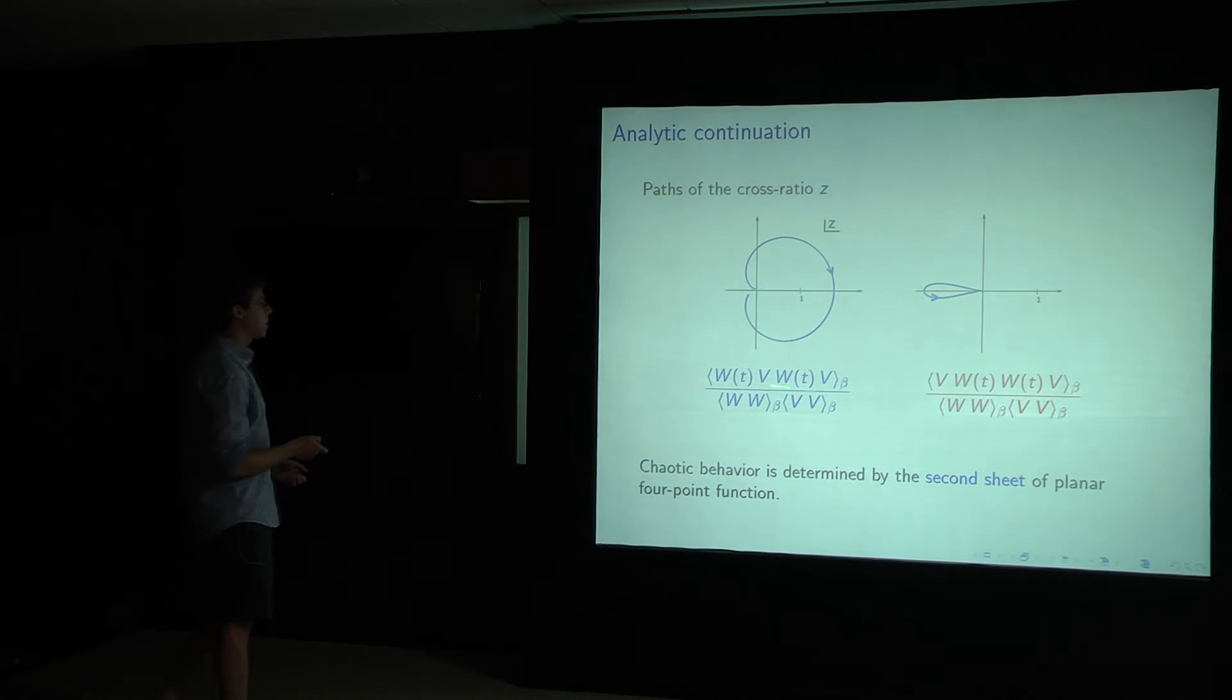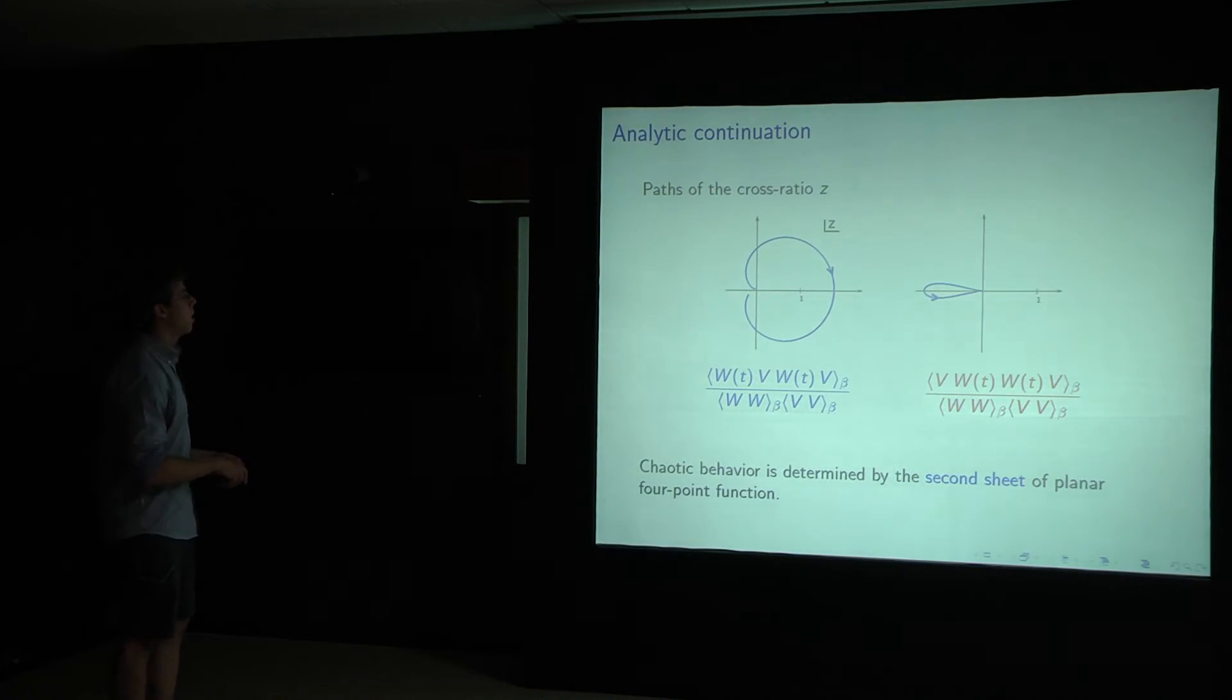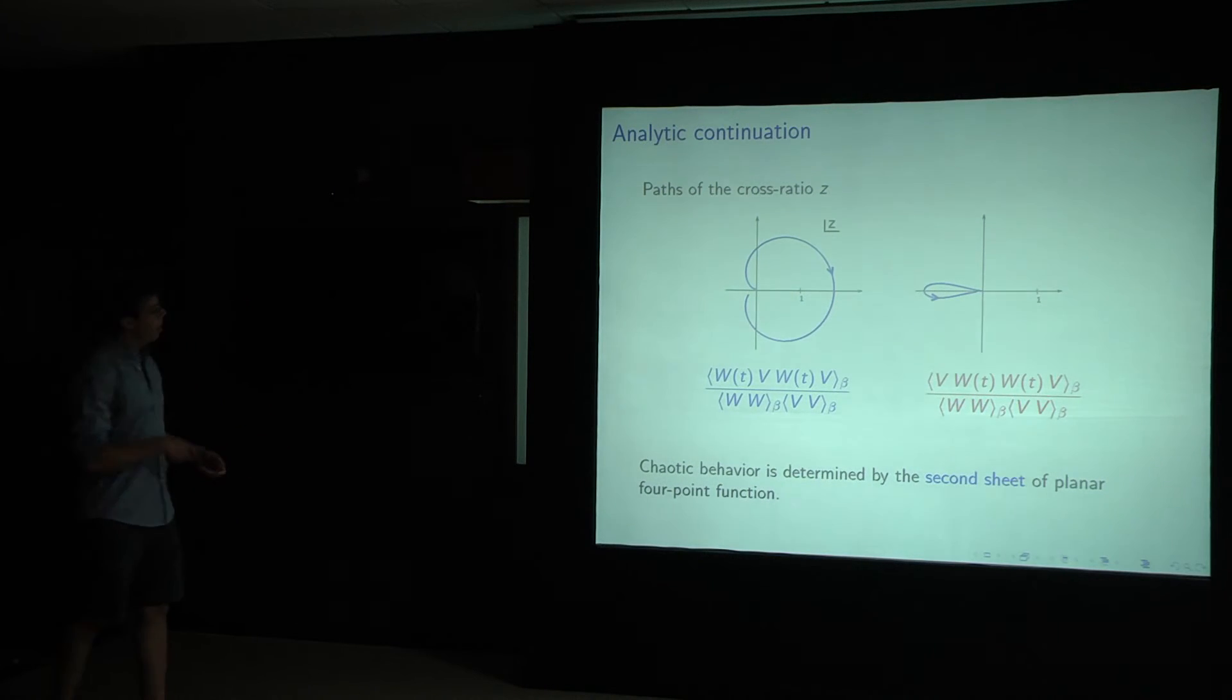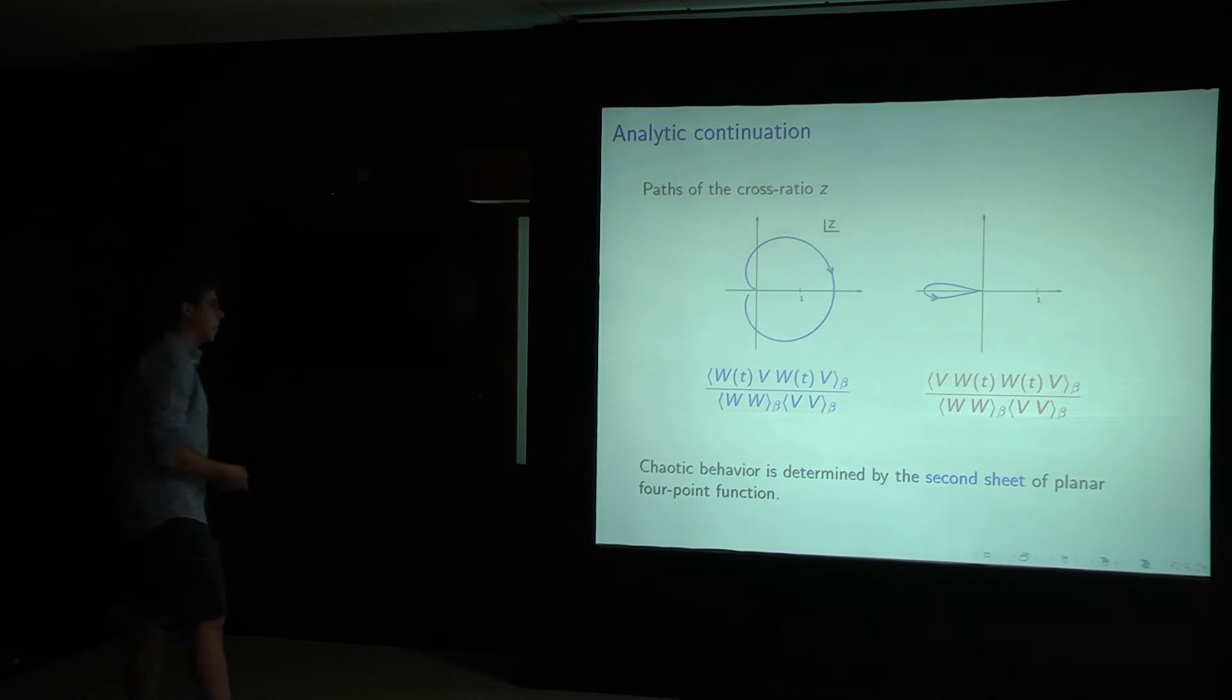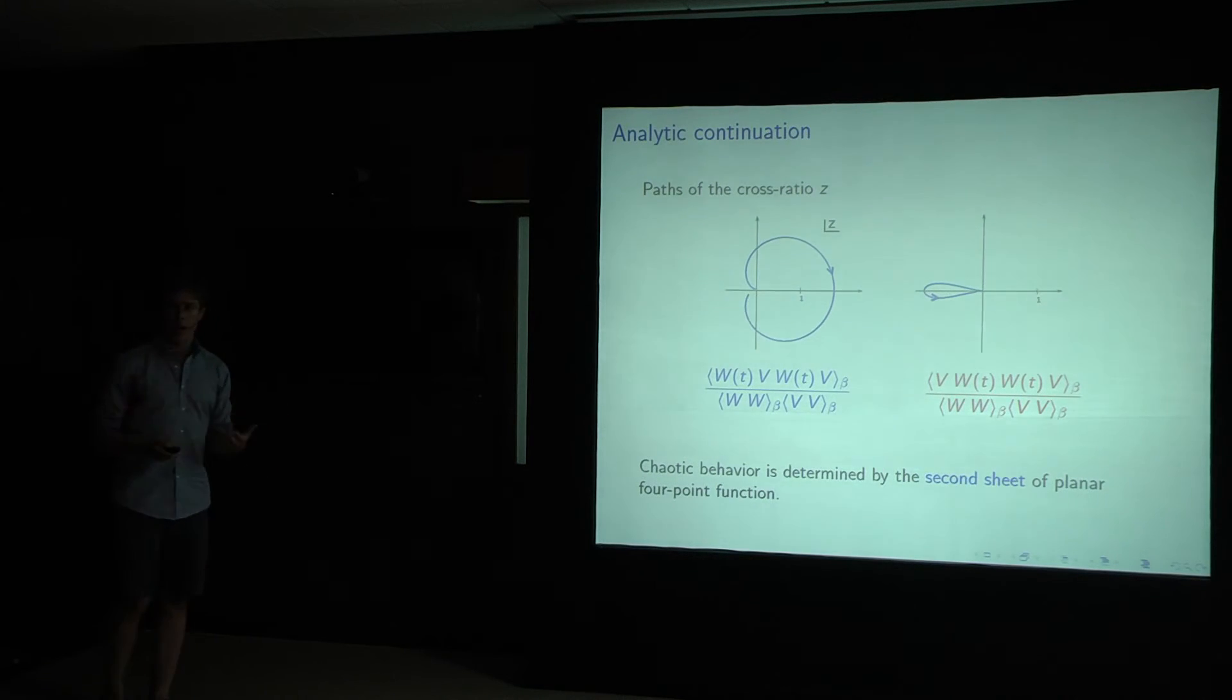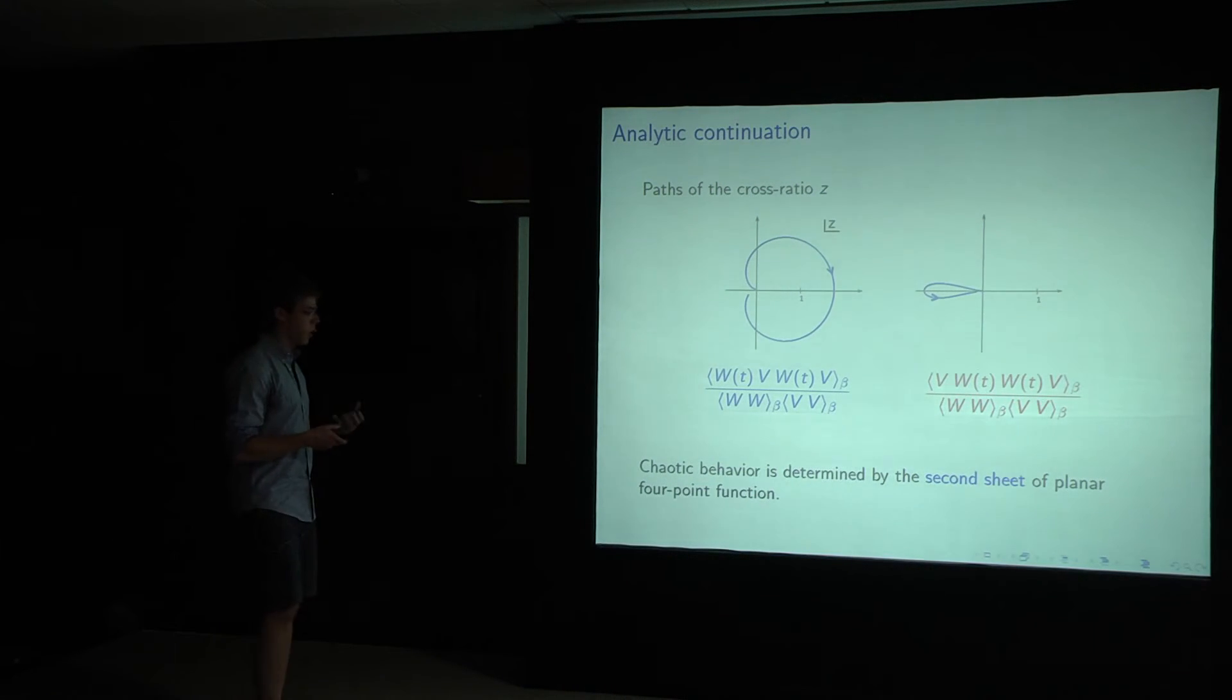And what we see is for this blue inner product of two different states correlation function, the cross ratio passes through this branch cut at one, and so we should continue to the second sheet in order to compute it. For this norm of a perturbed thermal state, that doesn't happen, and we stay on the primary sheet. And what we learn and the main takeaway from this section is that chaotic behavior is determined by the second sheet of the planar four point function on the plane.